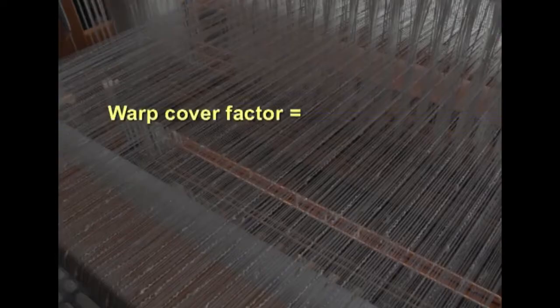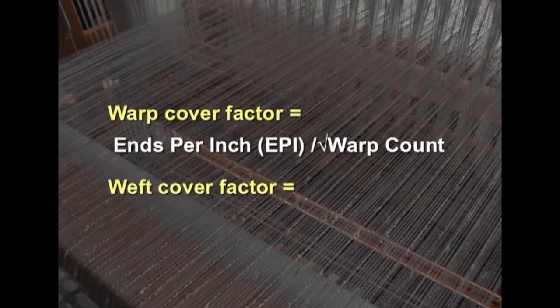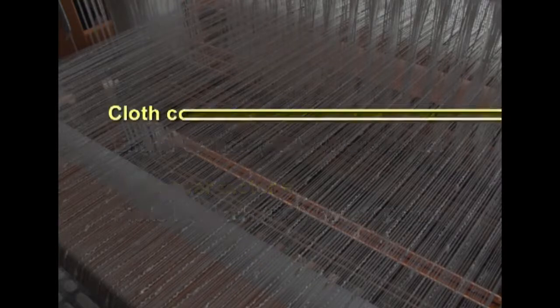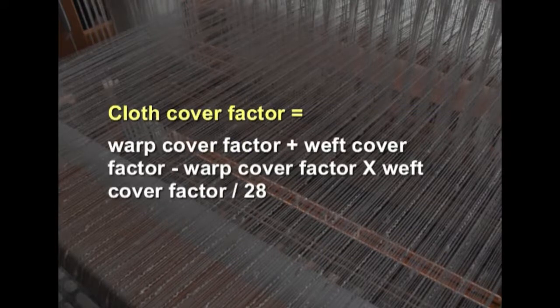Finally, we have cover — warp cover, weft cover, and cloth cover are three important calculations. Warp cover factor = ends per inch / √(warp count). Weft cover factor = picks per inch / √(weft count). Cloth cover factor = warp cover factor + weft cover factor − (warp cover factor × weft cover factor) / 28, where 28 is a constant.